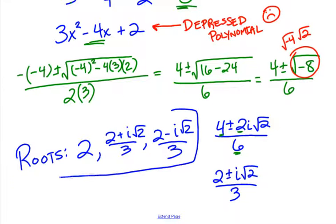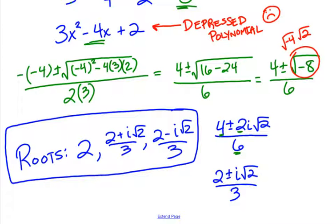Our three roots to this polynomial are: 2, which was given initially, then 2 plus i root 2 over 3, and 2 minus i root 2 over 3. We took our original root out, got a depressed polynomial, and then used the quadratic formula to get the remaining roots.